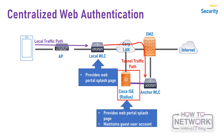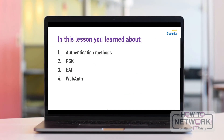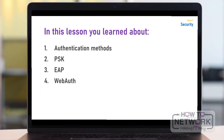In this lesson, you learned about the different authentication methods such as WPA2 and web authentication modes. We also described how PSK works and how insecure this type of authentication is. We covered implementations of EAP such as EAP-TLS, PEAP, and EAP-FAST. We also spoke about the different methods of web authentication such as local web authentication, local web authentication with auto anchor, local web portal with external authentication, and centralized web authentication using Cisco ISE. Thank you very much for watching the video.